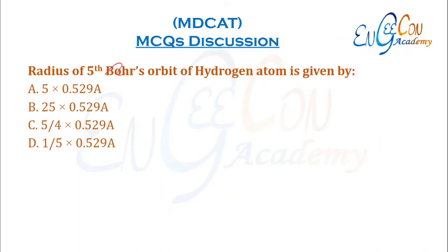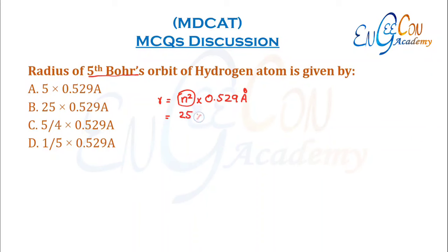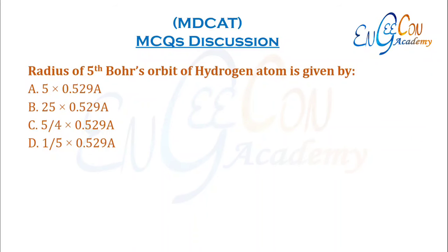Radius of the 5th Bohr's orbit of hydrogen atom. The formula for radius is R = n² × 0.529 angstroms. With n = 5, we get 5² = 25 × 0.529 angstroms. So B is the correct option.